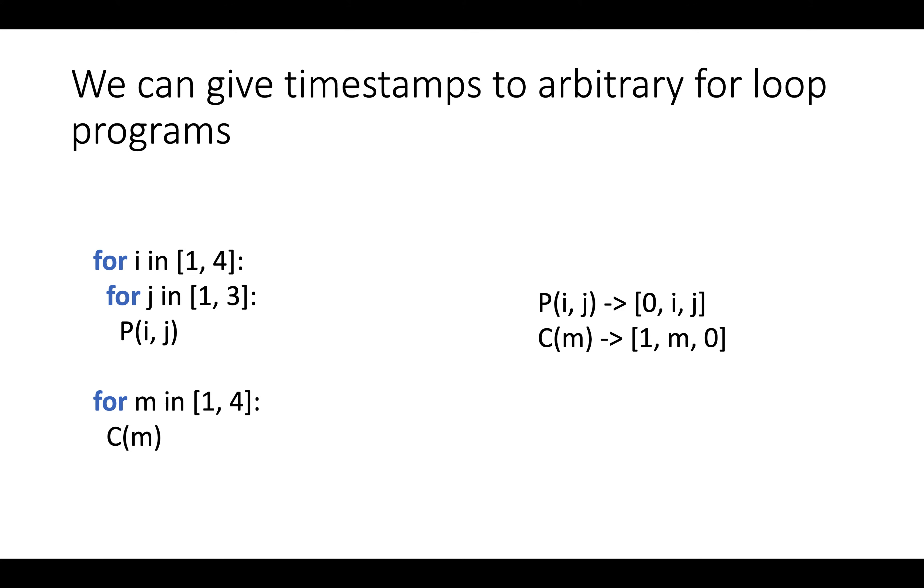And actually, using this multidimensional formulation, somewhat unintuitively, we can give timestamps to arbitrary for-loop programs, so we can actually give timestamps to statements in arbitrary sequences of for-loops, rather than just individual loop nests, by adding extra components that represent outer loops. So, for example, if we have a program for i in 1 to 4, and then for j in 1 to 3, p(i,j), the same program we just looked at, and then we add on another second outer loop nest, which says for m in 1 to 4, do statement c instance m.